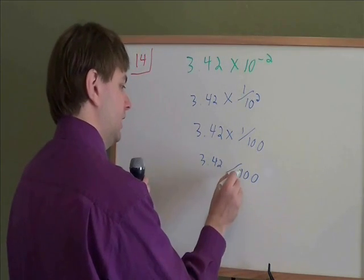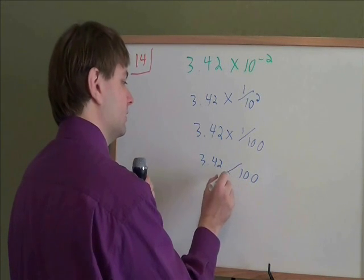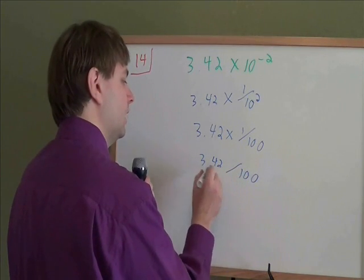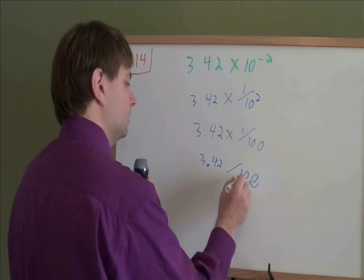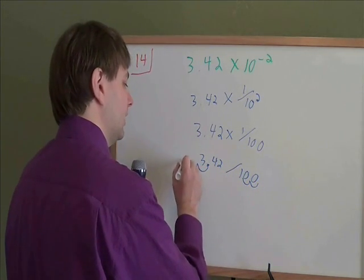Now when you're dividing by 10 or 100 or 1,000 or 10,000 or a million, something like that that's just one with a bunch of zeros, all you have to do is move your decimals. If you're dividing by something with two zeros, you just move that decimal two times to the left.